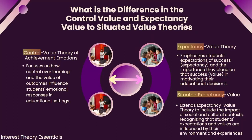Before we move to the following theory, let's briefly examine the differences between the control value theory of achievement emotions and the expectancy value theory to the situated value theory. We discussed them in both slides, but seeing a visual representation is suitable for a good comparison. The control value theory of achievement emotions explains how students' learning control and value perception affect their achievement emotions. Meanwhile, the expectancy value theory and its situated variant focuses on how students' success expectations and values motivate them, with the situated version also considering the role of social and cultural contexts.